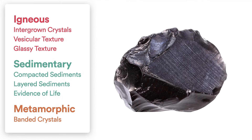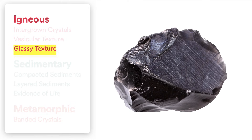Next. I don't see any crystals. I don't see any air bubbles, no compacted sediments or evidence of life, no banding. And so this is what we would call a glassy texture, and therefore it is an igneous rock. This is the rock obsidian, which forms when lava erupts out of a volcano and cools really quickly, not allowing any crystals to form.